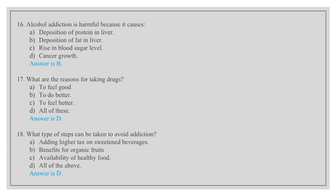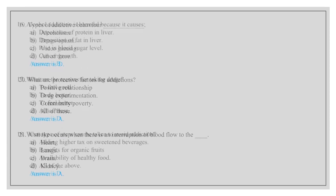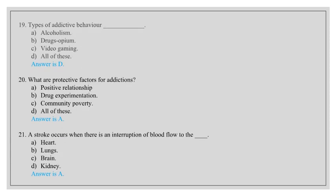What type of steps can be taken to avoid addiction? Adding high tax on sweetened beverages, benefits for organic fruits, availability of healthy food, all of the above. Answer is D, all of the above. Types of addictive behavior: alcoholism, drugs opium, video gaming, all of these. Answer is D, all of these.